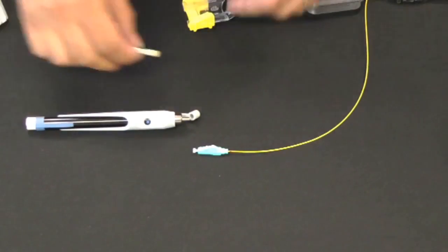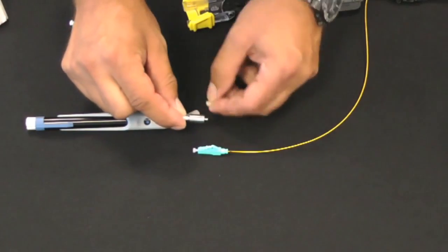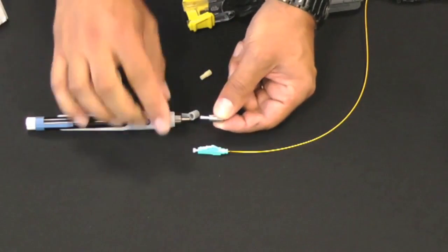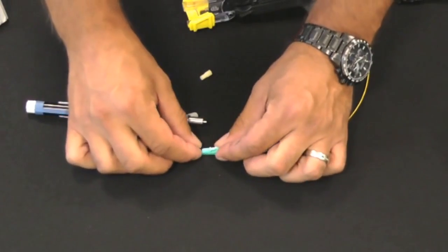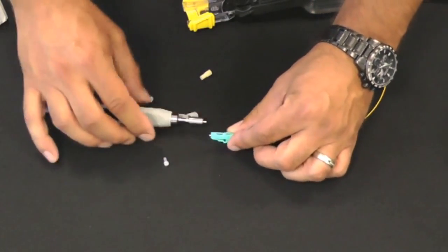When performing an LC termination, it will be necessary to use the LC adapter in the VFL. Place the adapter in the end of the VFL and then place the LC connector into the end of the adapter as shown here.